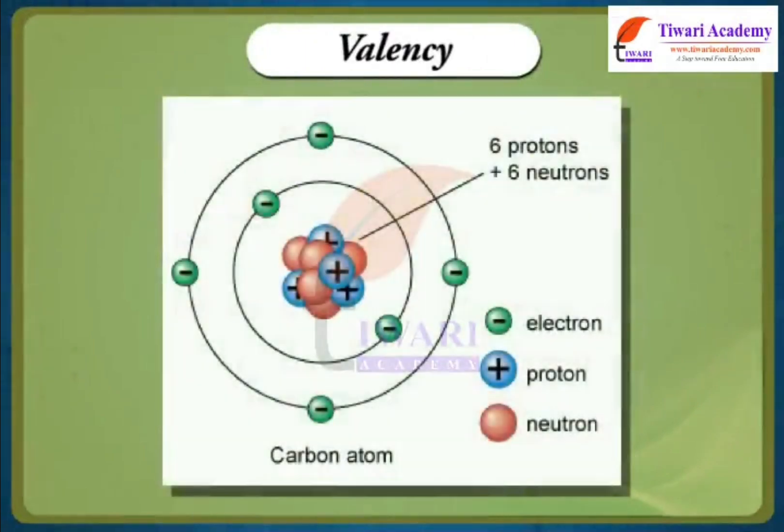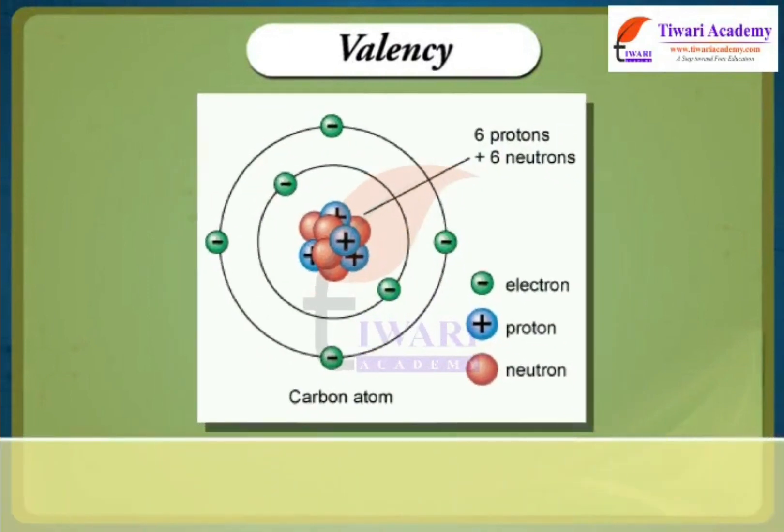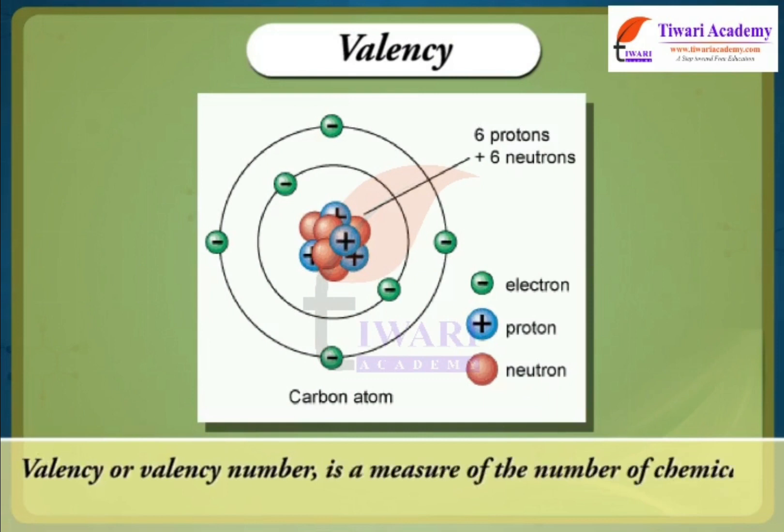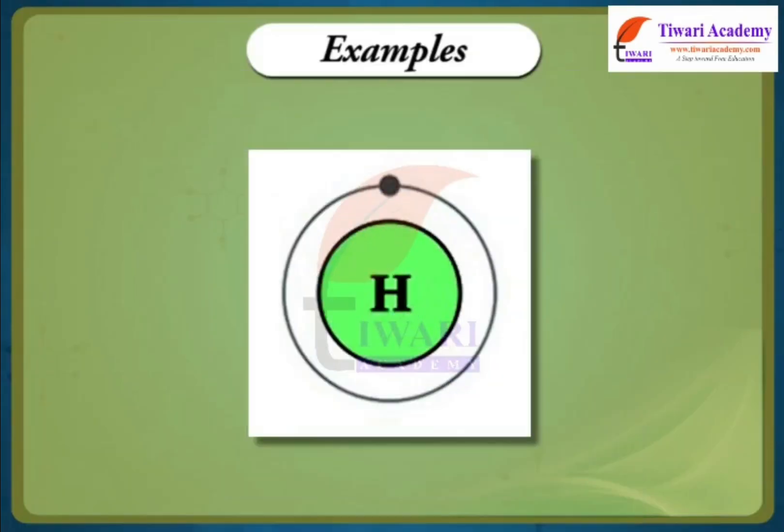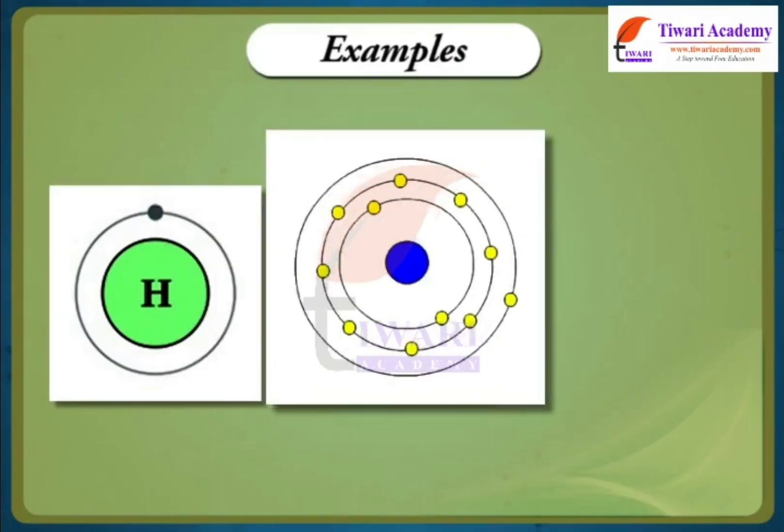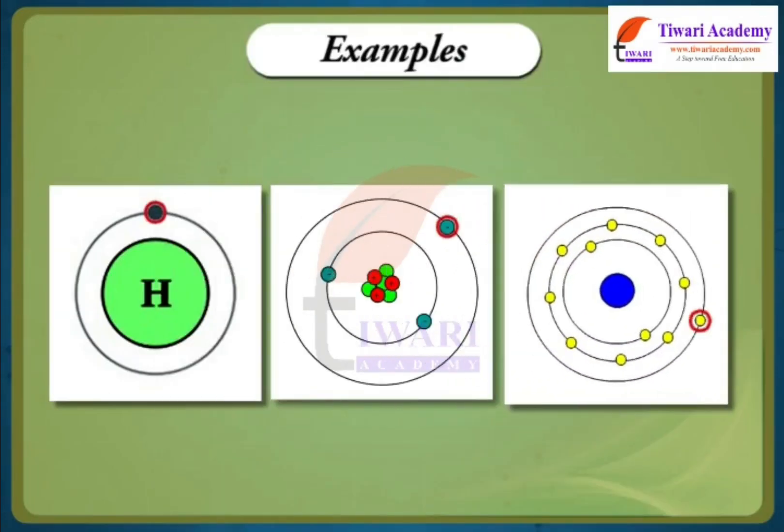The electrons present in the outermost shell of an atom are known as the valence electrons. Valency or valency number is a measure of the number of chemical bonds formed by the atoms of a given element. For example, hydrogen, lithium, sodium atoms contain one electron each in their outermost shell. Therefore, each one of them can lose one electron. So, they are said to have valency of one.